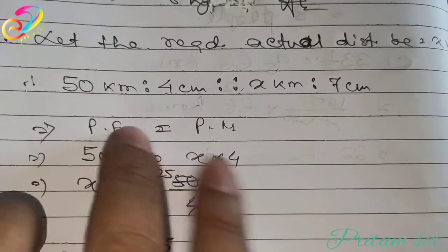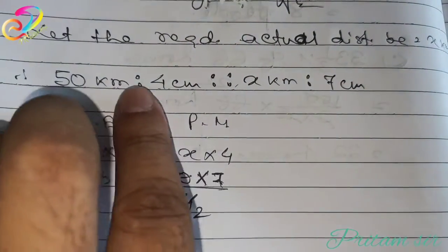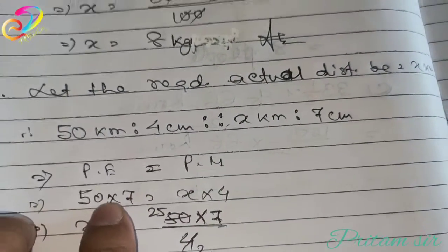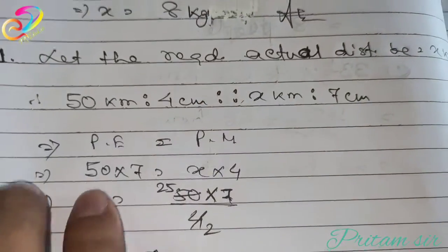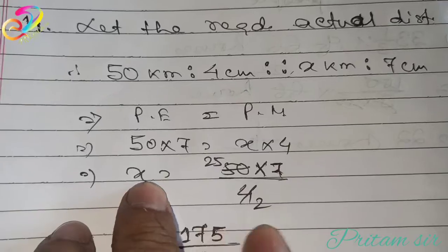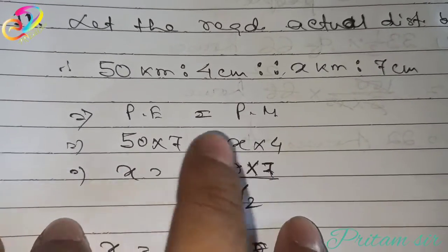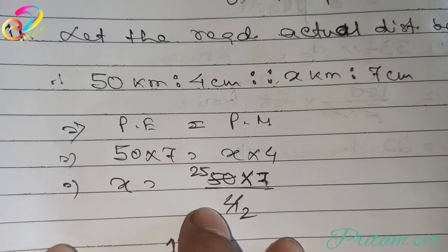So, by using product of extremes and product of means, 50 into 7 is 4 into x, 50 into 7 centimeter equal to x into 4 centimeter. Now, x equal to 50 into 7 by 4. This 4 is multiplied here, it will come to this side and become divide.